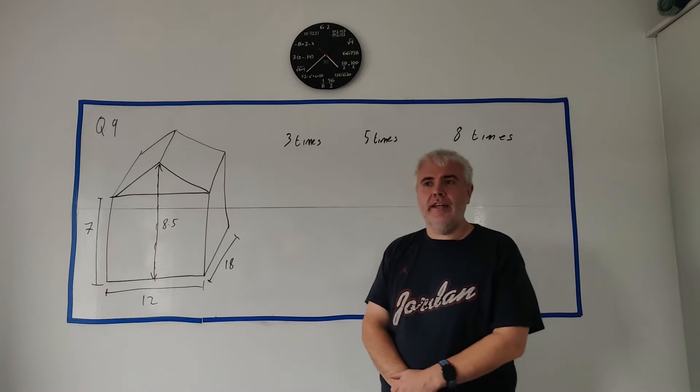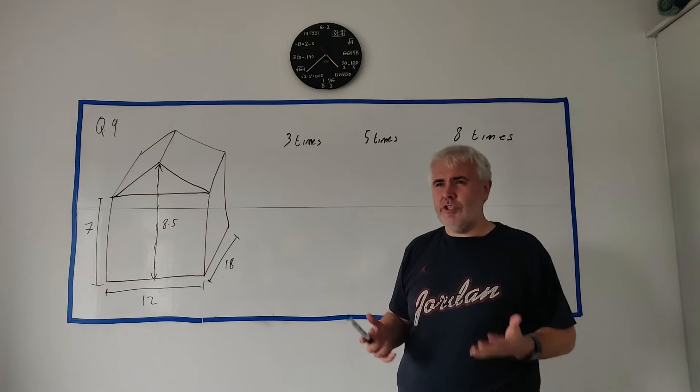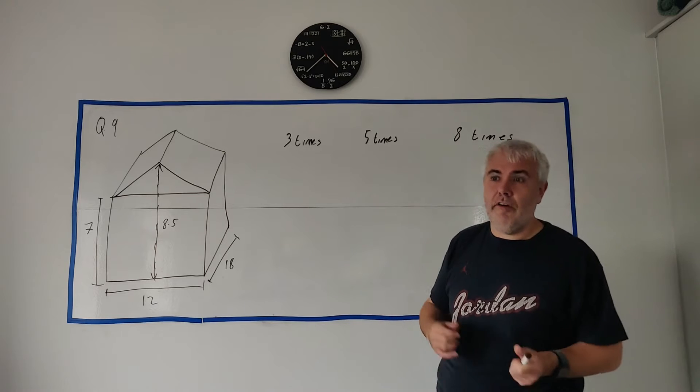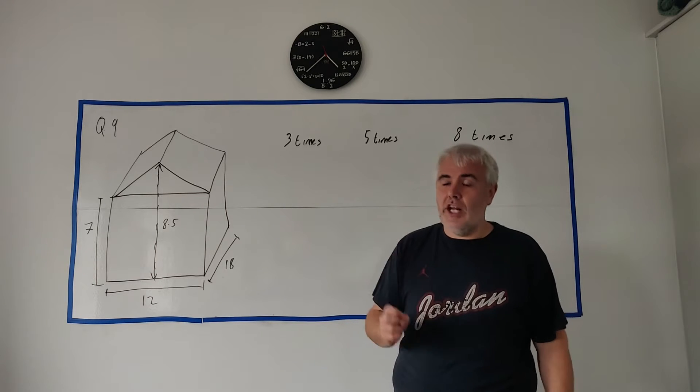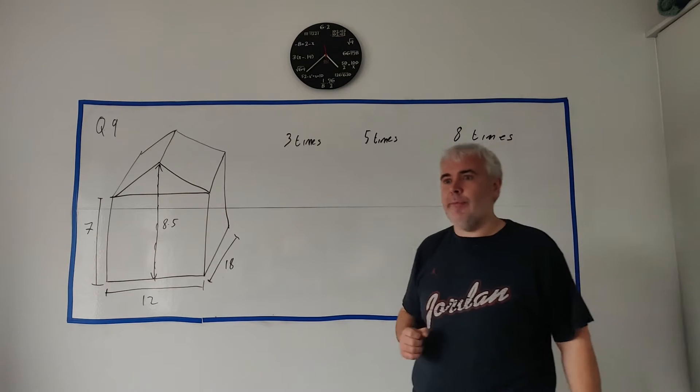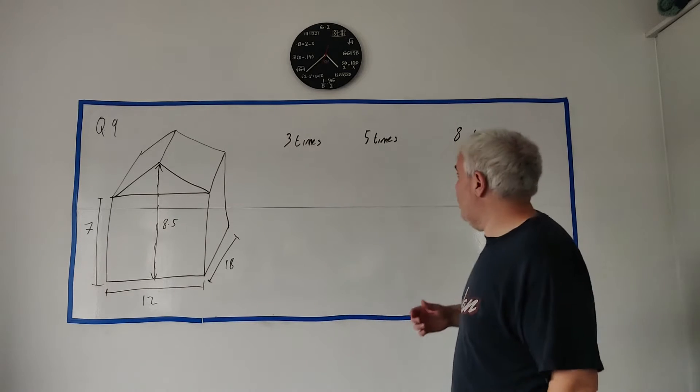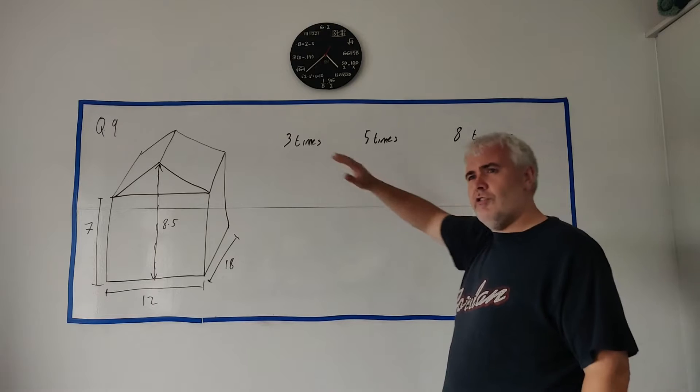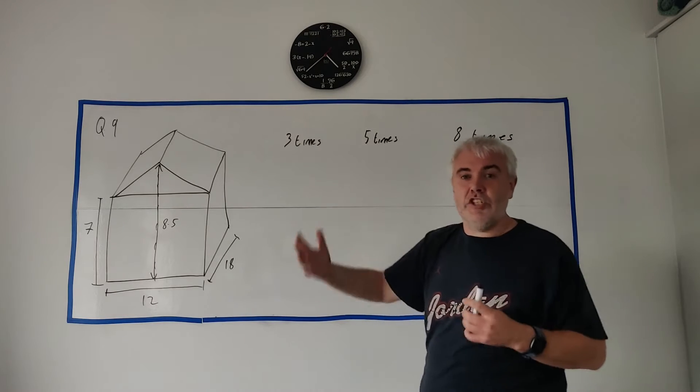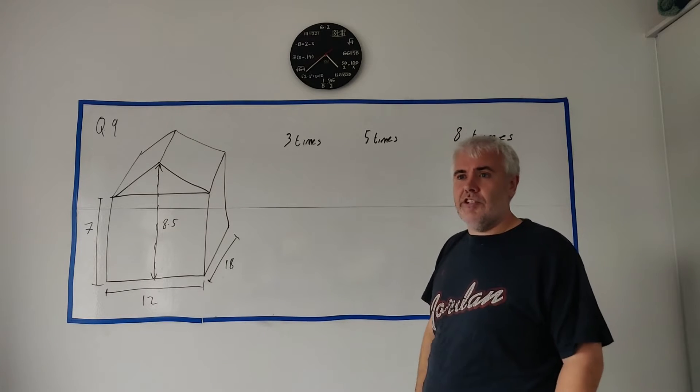And this is question 9. We have some geometry, we have a bit of volumes and areas, a bit of trigonometry and an enlargement question in it. But first of all, part A gives us a multiple choice. Also I should say they often start these questions with a story.